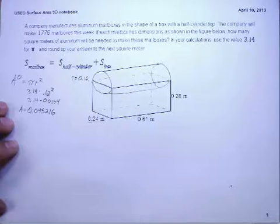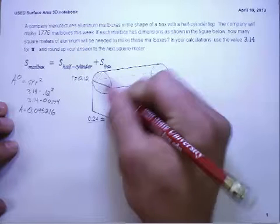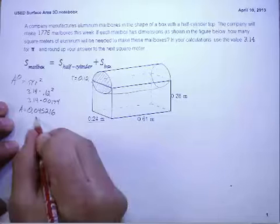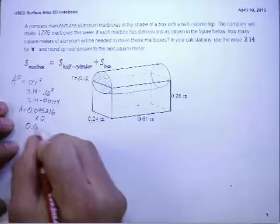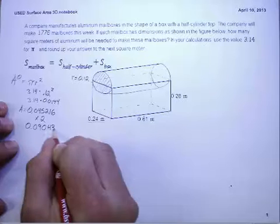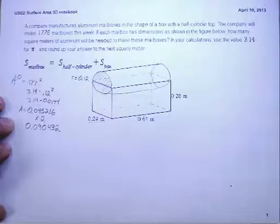Now, that is the area of one circle, so that would be the area of this whole circle piece right in here. We have 2, so we're going to multiply that whole thing by 2, and I get 0.090432. So that is the area of both circles together.